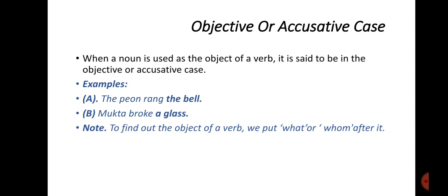They are therefore said to be in the objective or accusative case. To find out the object of a verb, we put 'what' or 'whom' after it. For example, in the sentence 'The peon rang what?' — the answer is 'the bell.' So the bell is the object here.